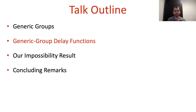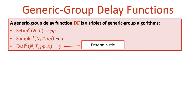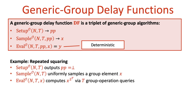Now that we have the generic group model in mind, let's define more formally generic group delay functions. A generic group delay function is a triplet of generic algorithms. The setup algorithm takes in the group order n and the delay parameter t and samples public parameters pp. The sample algorithm takes in n, t, and pp and samples an input x to the function. And the deterministic evaluation algorithm eval takes in n, t, pp, and x and outputs the value y of the delay function at input x. Note that pp, x, and y can all include explicit bitstrings in addition to group elements.